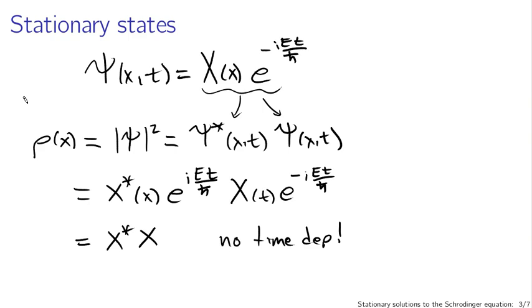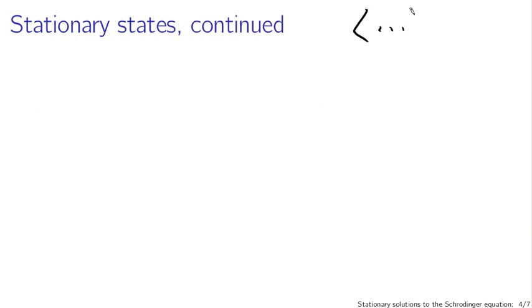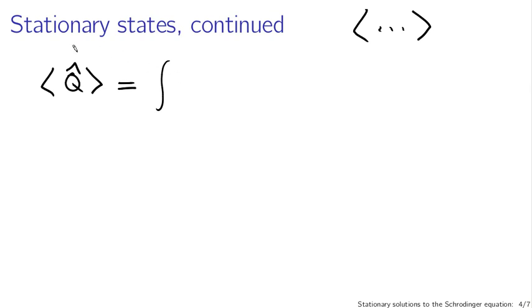That's one meaning of these things being called stationary states: the fact that I can write a wave function as a product like this, and the only time dependence comes in a simple complex exponential, means that time dependence drops out when I find the probability distribution. Another interpretation comes from considering expectation values. Suppose I want to calculate the expectation value of some generic operator Q̂: the expression is an integral of ψ* times the operator acting on ψ.